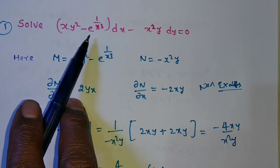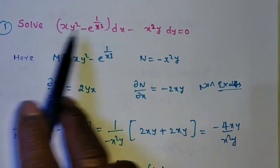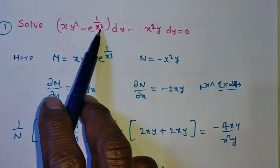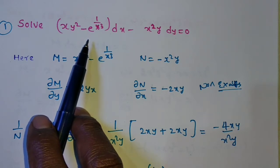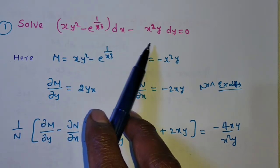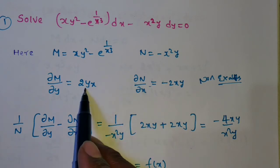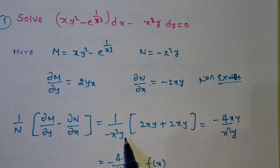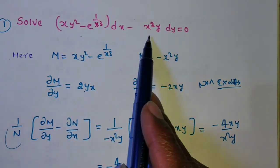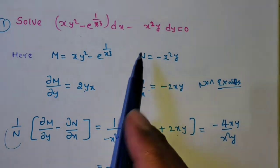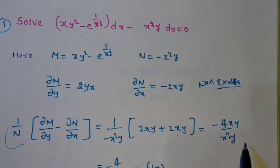Is it homogeneous? No, non-homogeneous. Is it like y·f(xy)dx + x·g(xy)dy? No, Rule 3 is not possible. So go for ∂M/∂y minus ∂N/∂x: 2xy minus (−2xy) gives 4xy. Now check dividing by N — N has one term, which is simpler. Divide: x and x cancel, y and y cancel, leaving −4/x, which is a function of x alone.